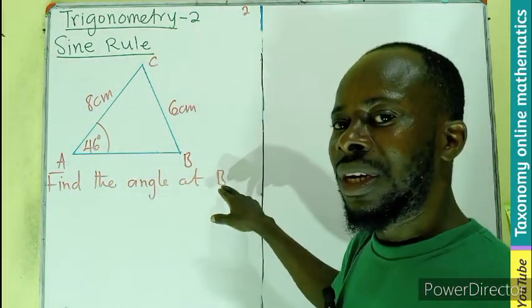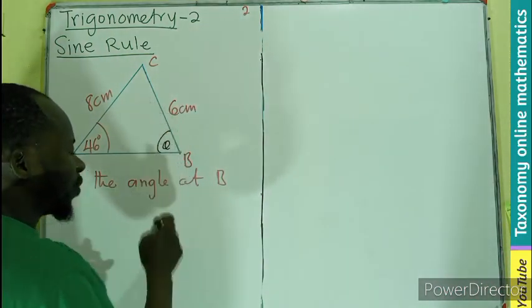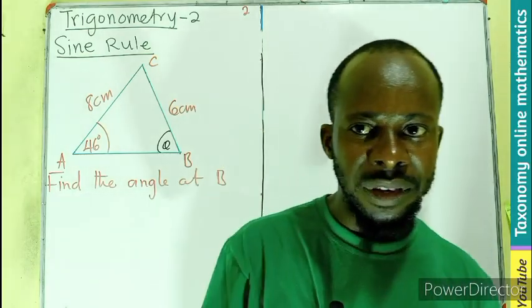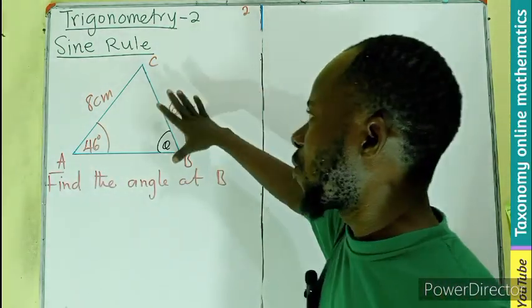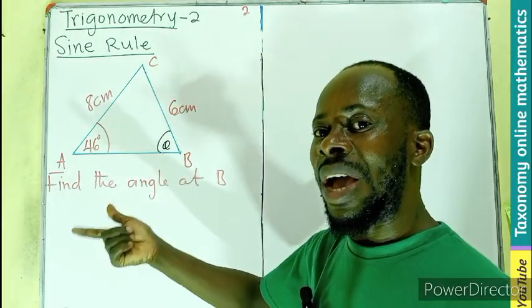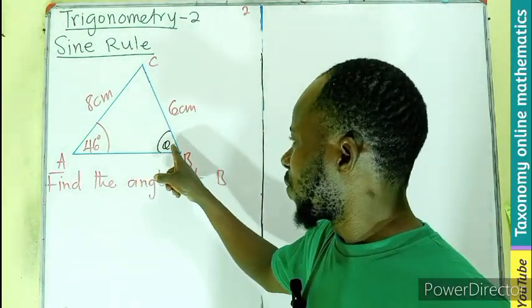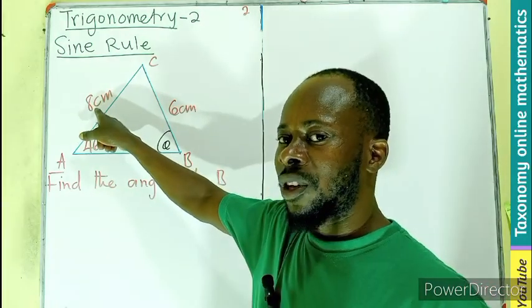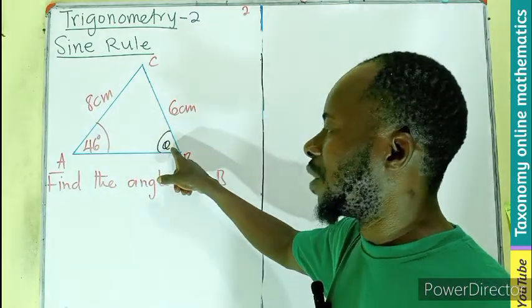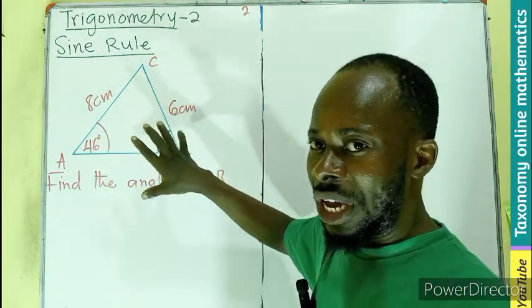To find the angle at B. Remember from the previous episode, if you are asked to find any side or any angle, there should be a corresponding side given. If you're asked to find an angle, there should be a corresponding side given. So if this is unknown, this side should be given.